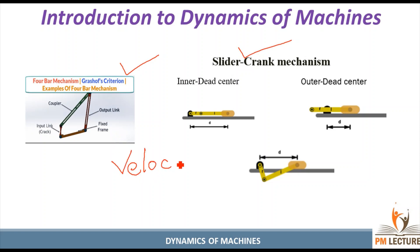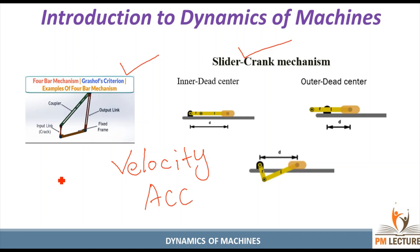We studied about the velocity and acceleration of these mechanisms. In velocity and acceleration, every mechanism needs a force applied to it. So we need to apply some force on this mechanism. When force is applied, velocity and acceleration are created. When you include force, that becomes DOM — Dynamics of Machines.